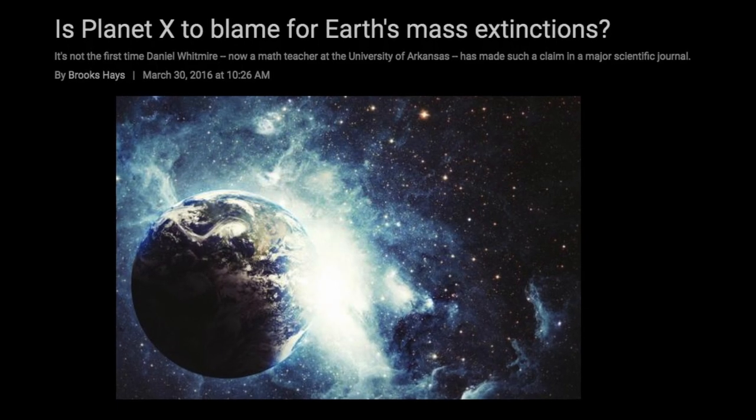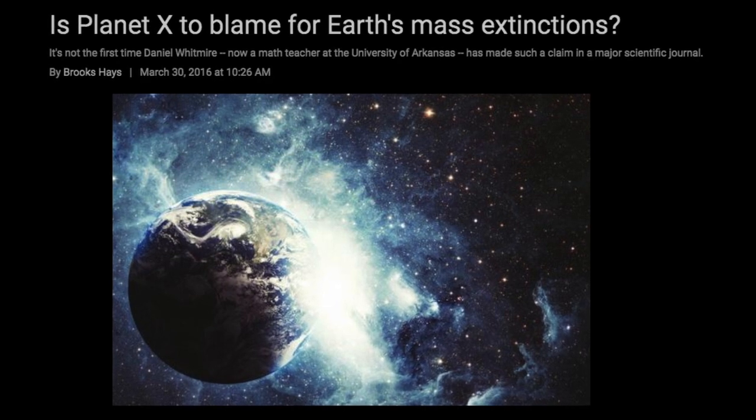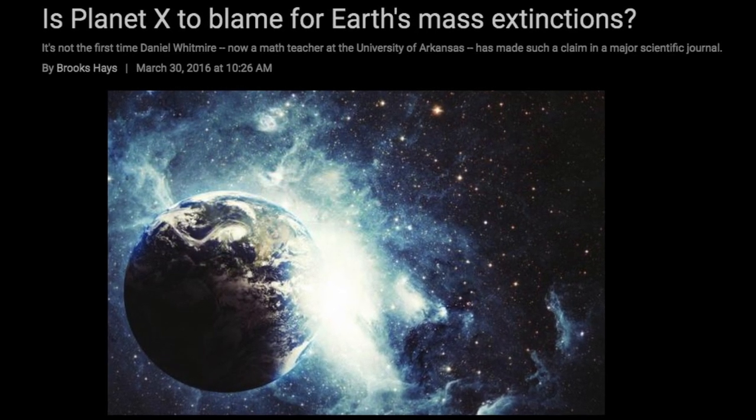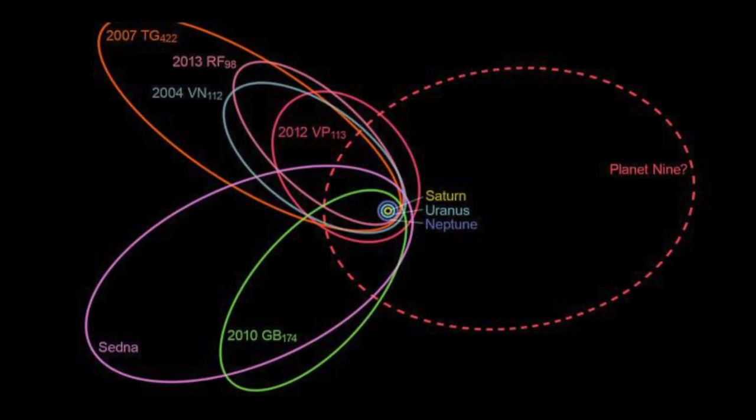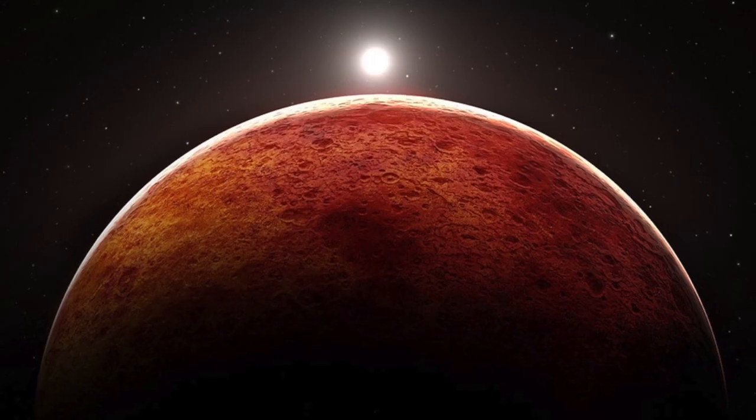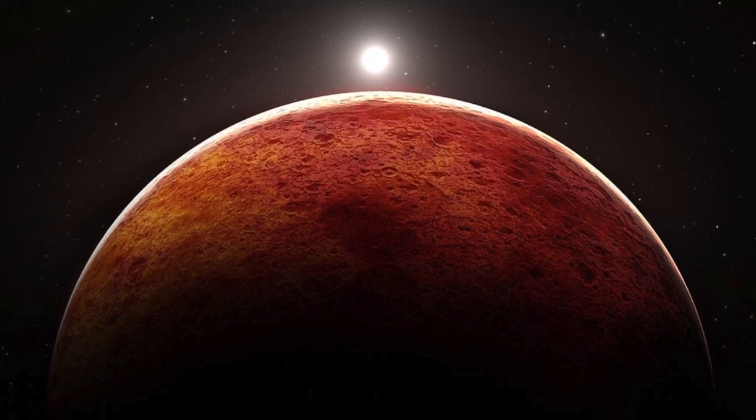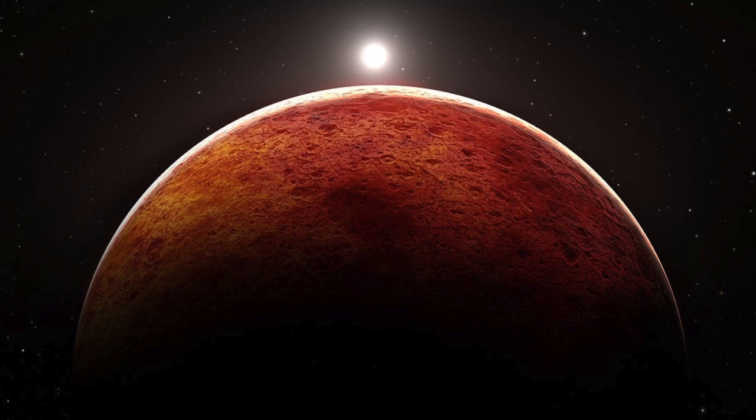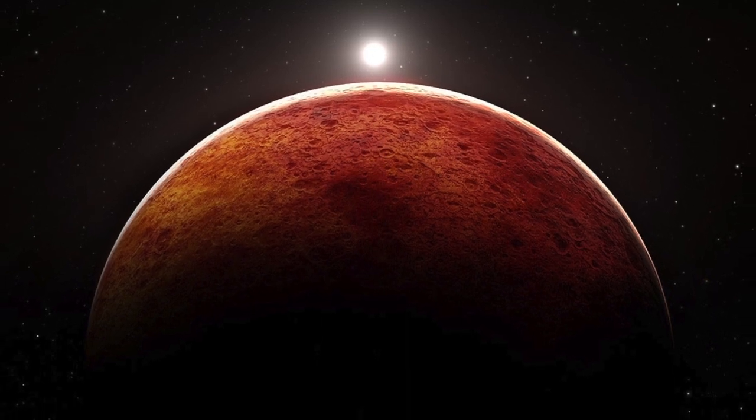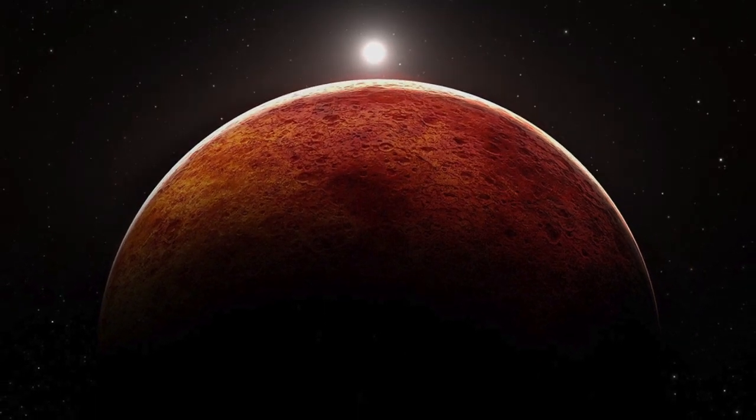Some astronomers have proposed that the gravitational influence of such a planet outside the orbit of Neptune could explain some anomalies, including the odd clustering of some trans-Neptunian objects. Eugene will discuss the evidence for and against such a planet, and how the data that supposedly supports Planet Nine's existence might be better explained by Electric Universe concepts.